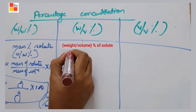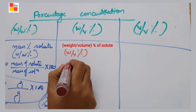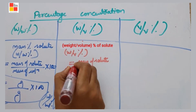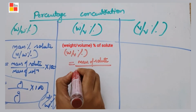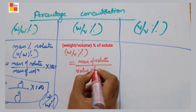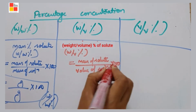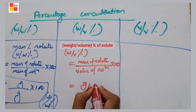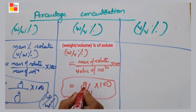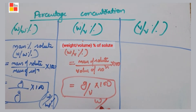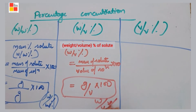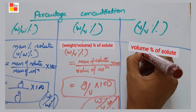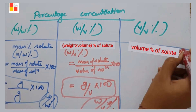Coming to weight by volume percent — the formula is: mass of solute divided by volume of solution, into 100. Mass of solute is in grams and volume of solution is in milliliters, so the unit is grams per 100 ml.